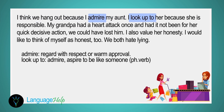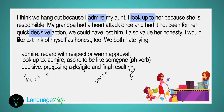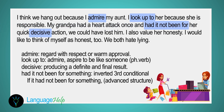The fourth and final cue is to explain why you spend most of your time with them. Our answer: 'I think we hang out because I admire my aunt — I look up to her because she is responsible. My grandpa had a heart attack once, and had it not been for her quick, decisive action, we could have lost him. I also value her honesty. I too would like to think of myself as honest — we both hate lying.'